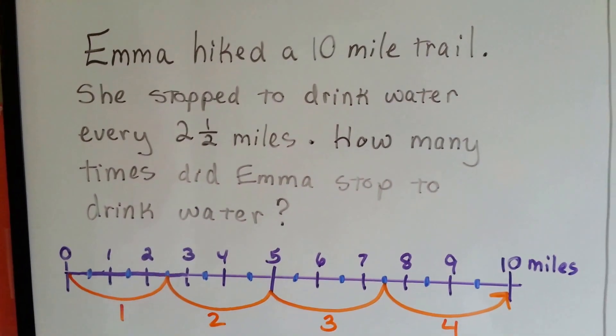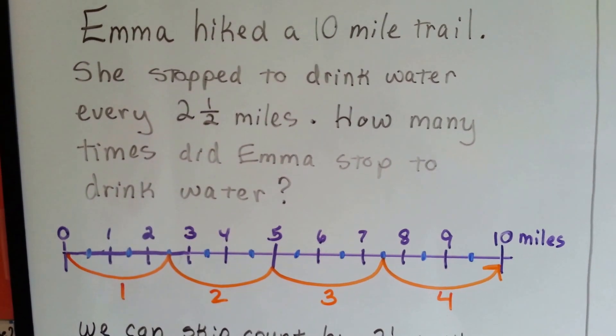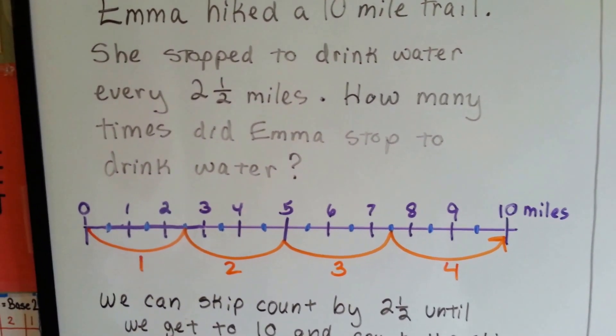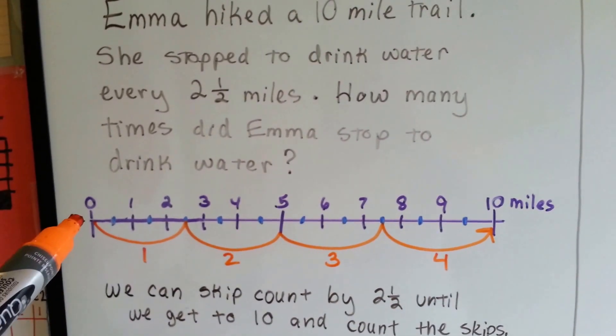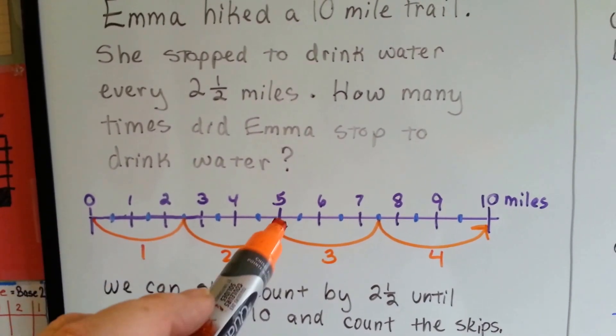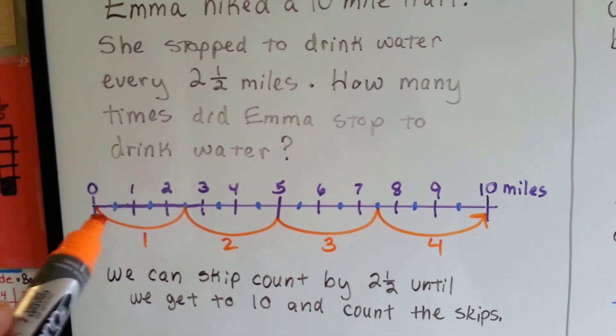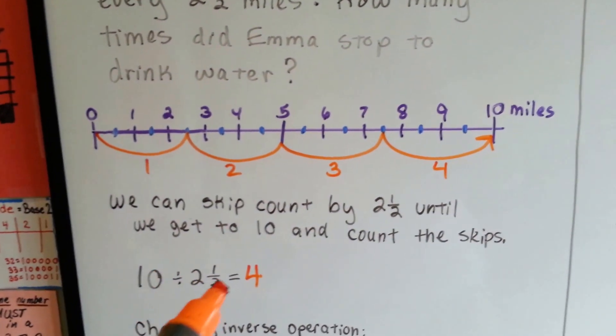Emma hiked a 10 mile trail. She stopped to drink water every 2 1/2 miles. How many times did Emma stop to drink water? So we make a number line that goes to 10 miles, and we skip count every 2 1/2. Then we find out how many times we skipped. We skipped 4 times. So we know that 10 divided by 2 1/2 is 4.